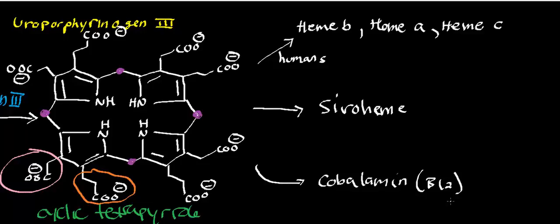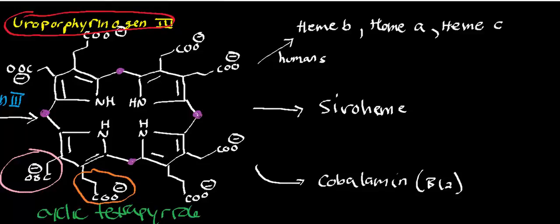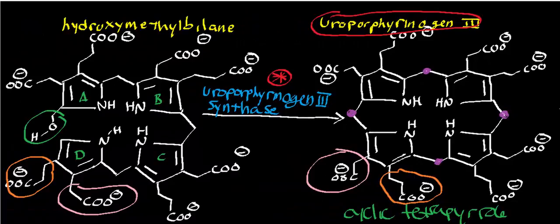B12 is used in basically two reactions in humans: methylmalonyl-CoA mutase, and methionine synthase, also called homocysteine S-methyltransferase. Siroheame is not used in humans as far as anyone can tell, but heme B, heme A, heme C, and cobalamin are all used in humans, even though cobalamin is not made in humans. All of these come from the special product uroporphyrinogen 3. I hope this video gave you a little bit of perspective on uroporphyrinogen 3 and its synthesis from hydroxymethylbilane by uroporphyrinogen 3 synthase.